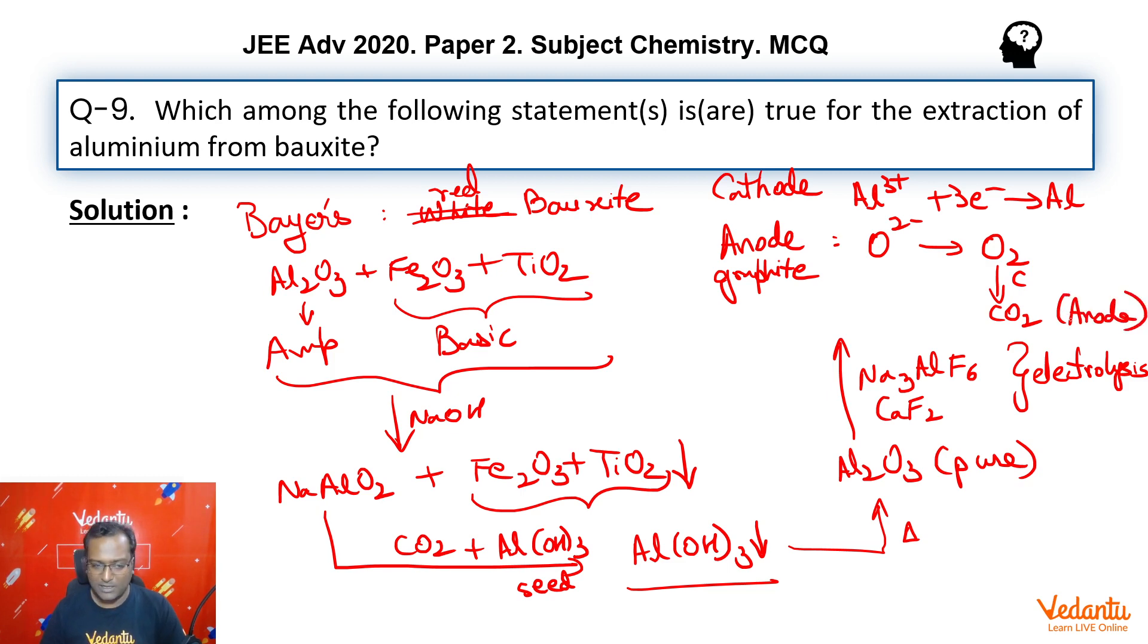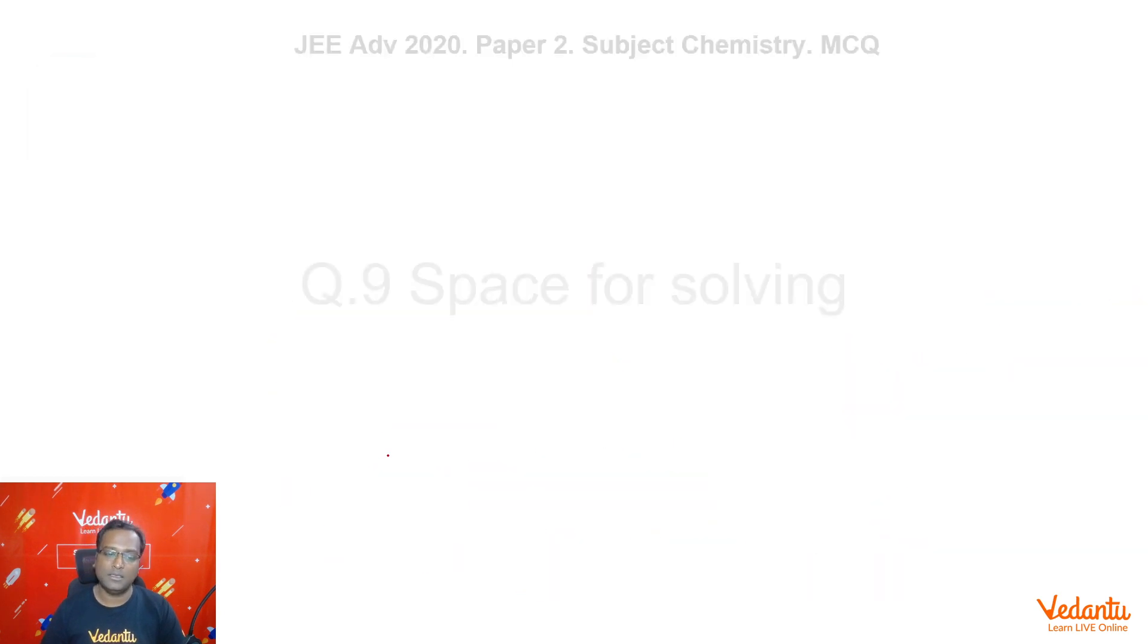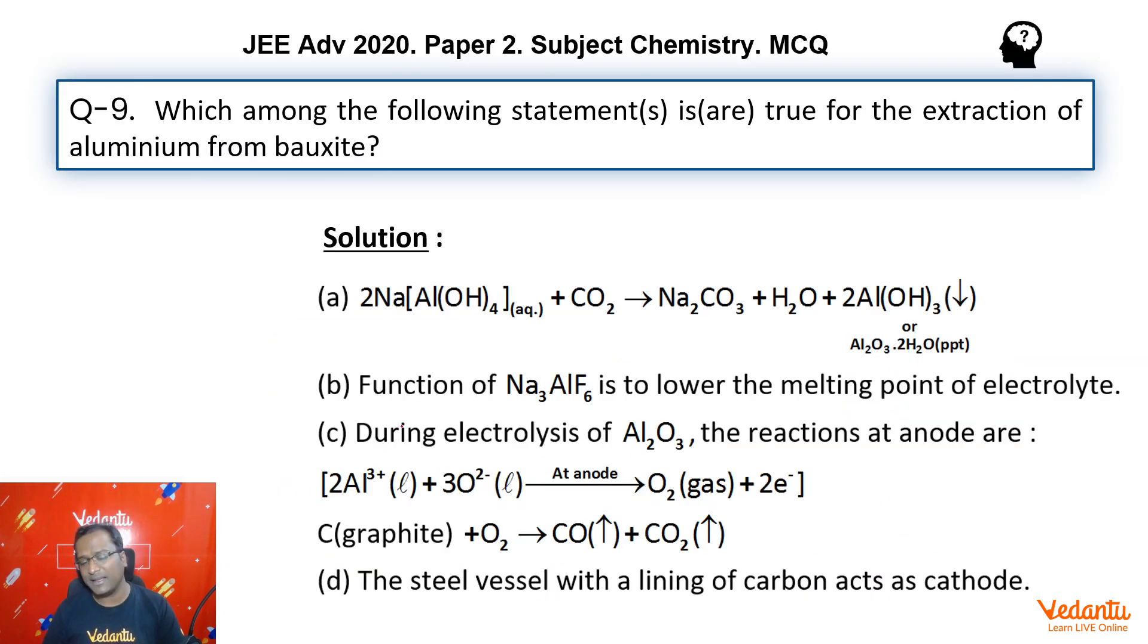Let's go back to our question. Hydrated alumina precipitates when CO₂ is bubbled through sodium aluminate solution - perfect, correct. Addition of Na₃AlF₆ lowers the melting point - correct. CO₂ is evolved at the anode during electrolysis - correct. The cathode is made of steel lined with carbon - that's a fact, also correct. Hence, all the options here are indeed correct.